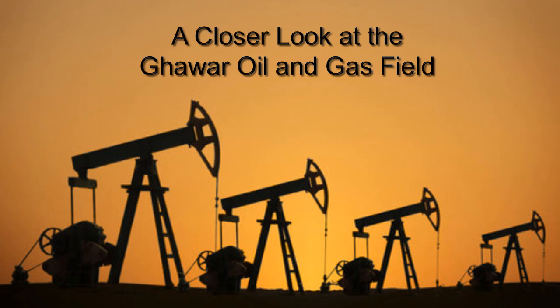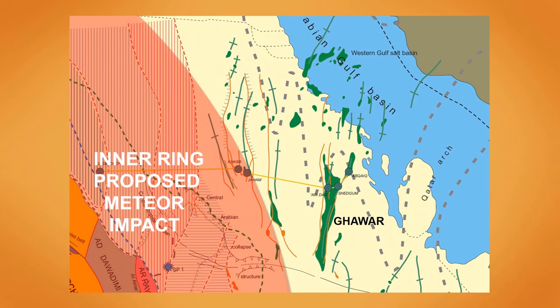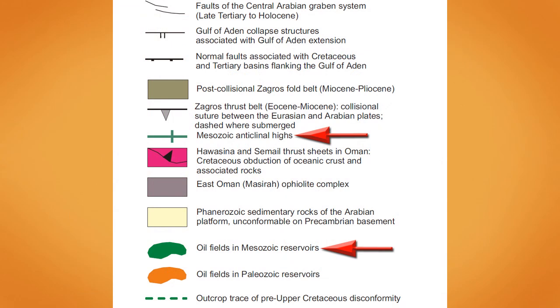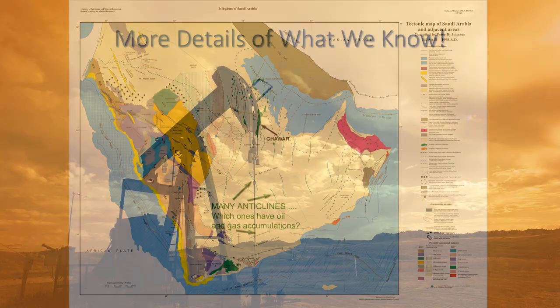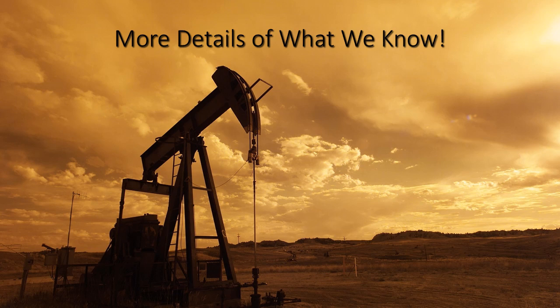Let's have a closer look at the biggest oil and gas field in the world — Ghawar in Saudi Arabia. Here we can see that the Ghawar oil and gas field and other smaller oil fields are all proximal to the inner ring of the proposed meteor impact, and not within the inner ring. Most of the oil accumulation is inside the Mesozoic anticlinal highs. There are many Mesozoic anticlines in Saudi Arabia, so to decide which anticlines are worthy of exploration, we need more details on what we know.